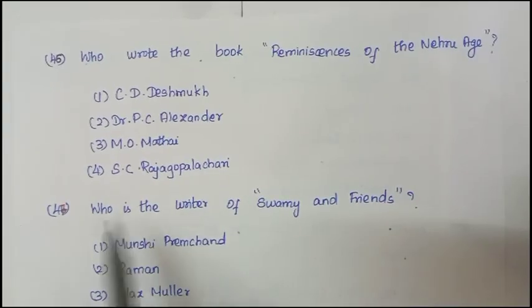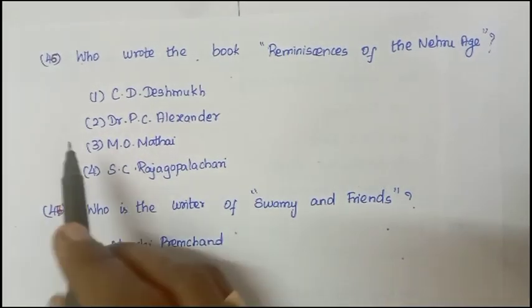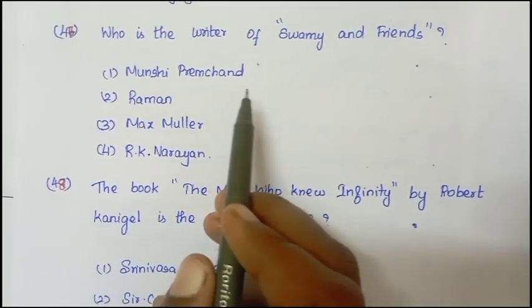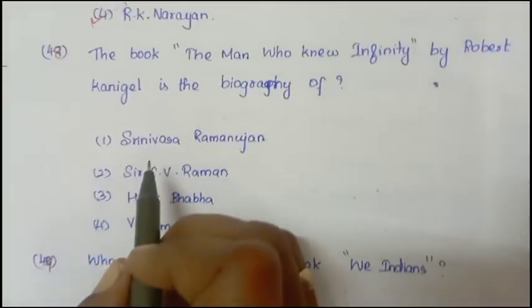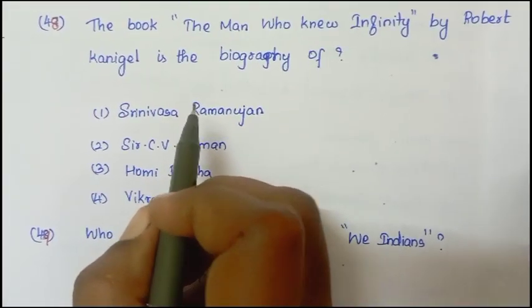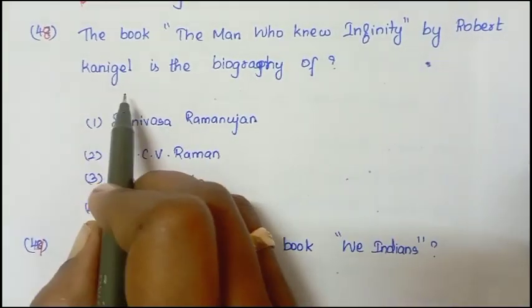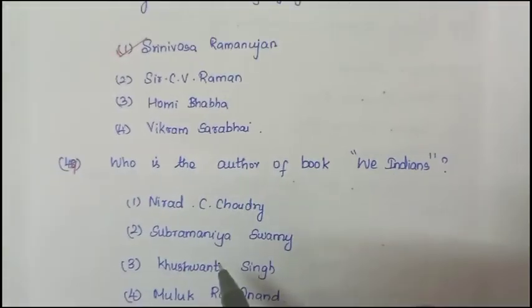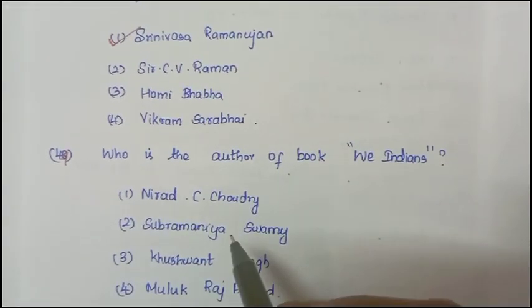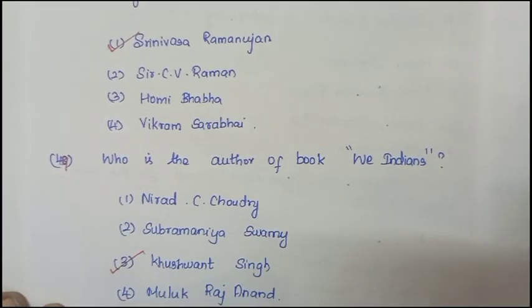Next question: Who wrote the book Reminiscences of the Nehru Age? Answer is M.O. Mathai. Next question: Who is the writer of Swami and Friends? Answer is R.K. Narayan. Next question: The book The Man Who Knew Infinity by Robert Kanigel is the biography of Srinivasa Ramanujan. Next question: Who is the author of the book We Indians? Answer is Khushwant Singh.